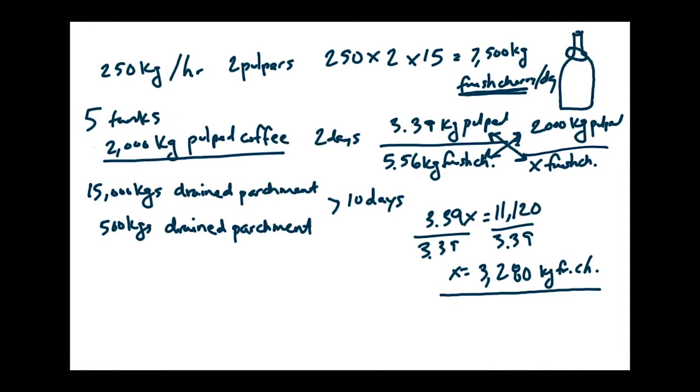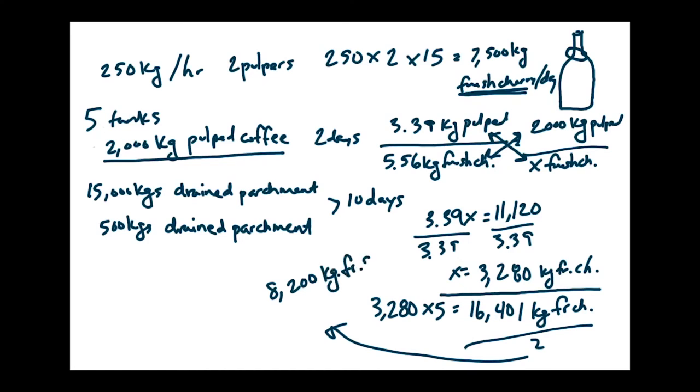Once we get here, then we're going to divide each side by 3.39 because we want to solve for x. So 11,120 divided by 3.39 equals 3,280 kilograms of what? Fresh cherry. That's right. 3,280 kilograms of fresh cherry. Now, remember, we have five different tanks. So we're putting 2,000 kilograms of pulped coffee in each tank. So what should we do to this number? That's right. We should multiply it times 5. 3,280 times 5 is going to give us 16,400 kilograms of fresh cherry. Now, wait. We're not done. Because we said that the protocol we use is a 48-hour fermentation. Now, I realize you might give or take a few hours. But what do we need to do in order to figure out per day? We need to divide it by 2. So 16,400 divided by 2 is 8,200 kilograms of fresh cherry.